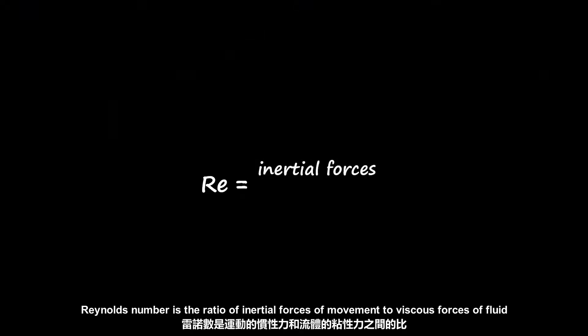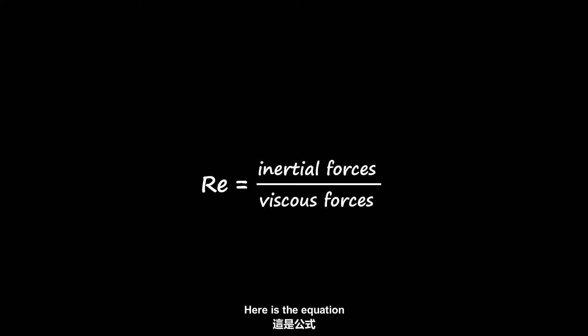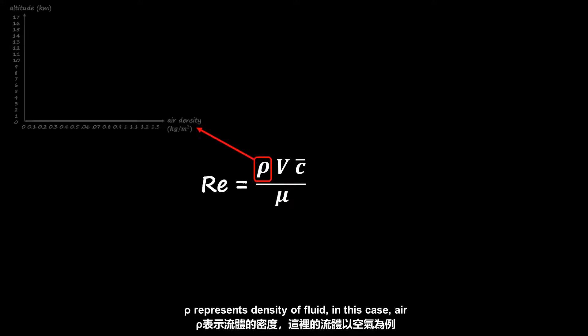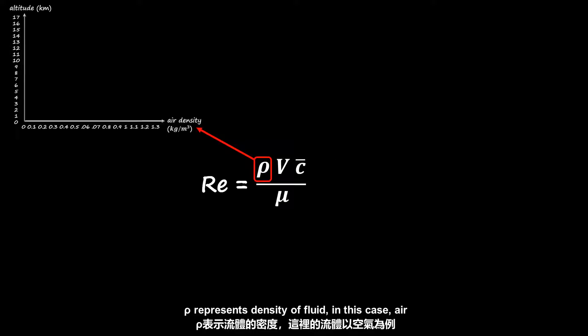Reynolds number is the ratio of inertial forces of movement to viscous forces of fluid. Here is the equation. Rho represents density of fluid, in this case air.